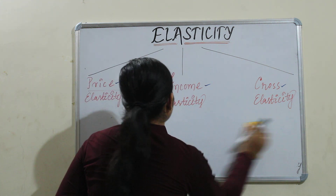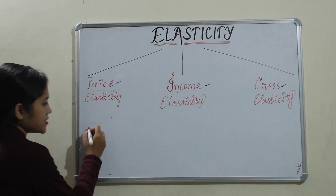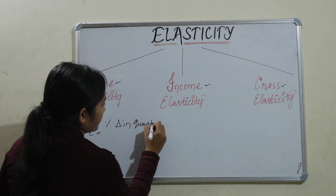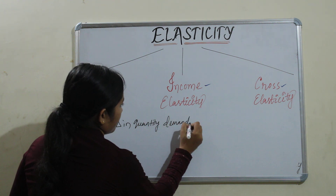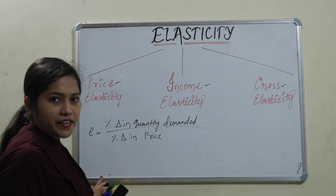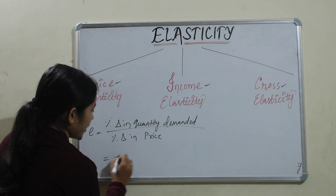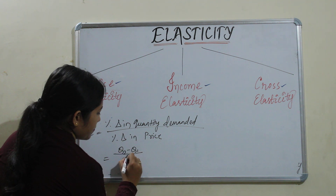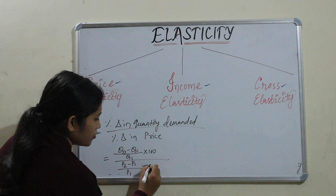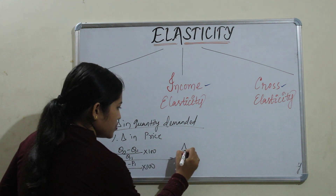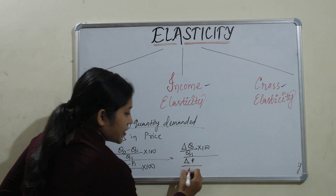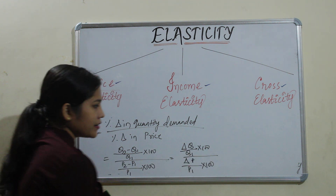First one is price elasticity — how we will measure it. Elasticity is represented by small 'e', that is percentage change in quantity demanded divided by percentage change in price. How we will measure the percentage change? Change divided by initial quantity into 100. So we can write: Q2 minus Q1 divided by Q1 into 100, over change in P divided by initial price into 100. The 100s cancel.